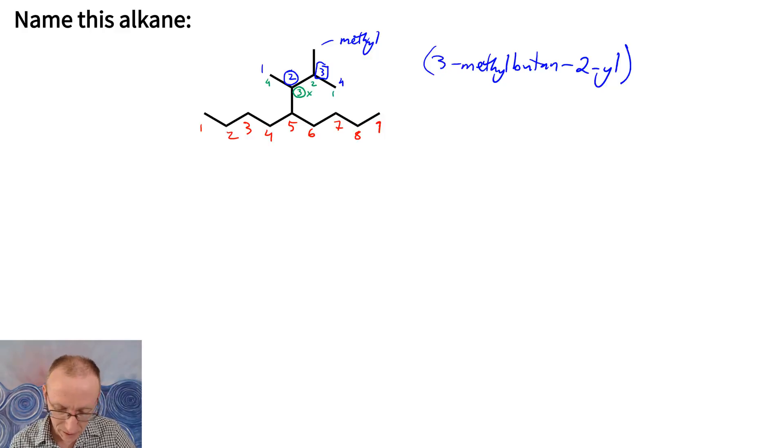So let's go back and number this parent chain from this end. One, two, three, four, five, six, seven, eight, nine. So from either end we end up at the five position is where the substituent is attached.